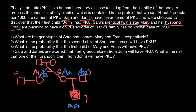The pedigree now represents everything we know about this family. Let's answer the questions. The first question: what are the genotypes of Sarah, James, Mary, and Frank respectively? Sarah and James we know for sure are obligate carriers because they have an affected child, so they have to be carriers. We also know the genotype of Sarah's sister Mary because she is the identical twin of Sarah, so she also has to be an obligate carrier. Now what about Frank? From our problem we know that carriers are 5 per 1,000 people, or we can also say 1 per 200 people.